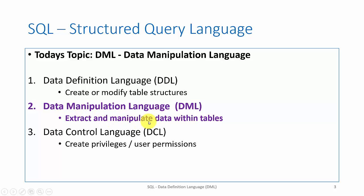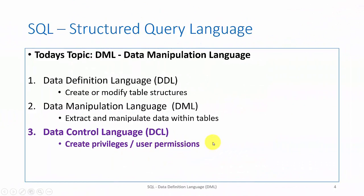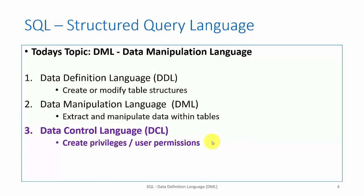Part 2 is DML, which is an acronym for Data Manipulation Language. This part of SQL contains statements for operating on data. While DDL was about the structure needed to store data, DML is about storing and manipulating specific data inside that structure. The third part is DCL, an acronym for Data Control Language, which contains SQL statements for creating, changing, and deleting users and user roles, and for specifying and granting permissions to databases and tables.